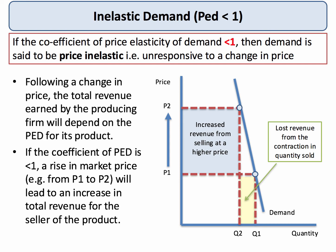Key revision point: when demand is inelastic, an increase in price will cause an increase in revenue for the firm. Turn it around and a fall in price — for example from P2 to P1 — would cause a fall in the total revenue for the supplier.